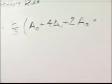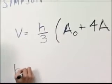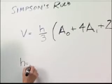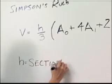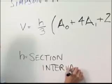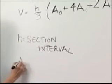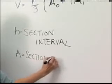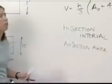Now, you might be wondering what each of these values stand for. H is your interval. In this case, since we're doing section areas, it will be the section interval, the distance between each section. Each of these A values corresponds to an area at each section. And N is the number of divisions.